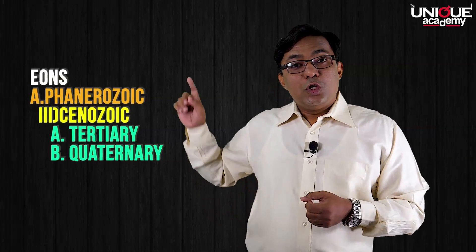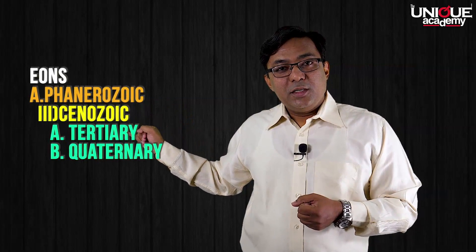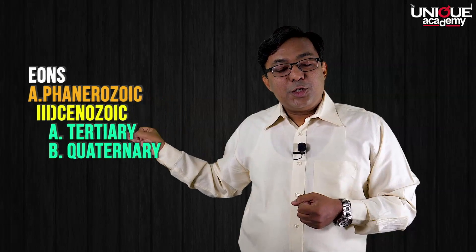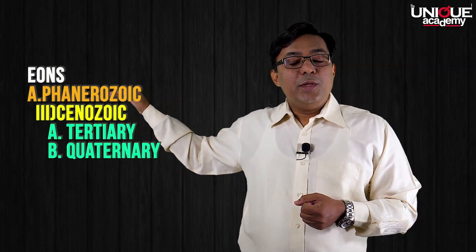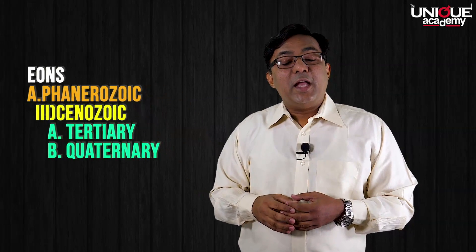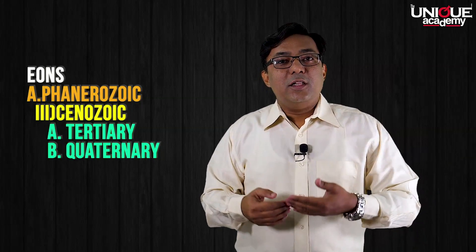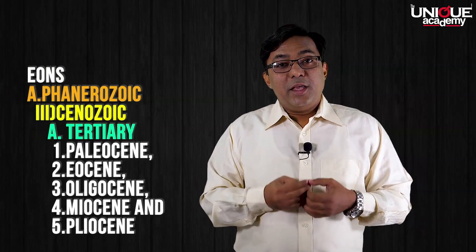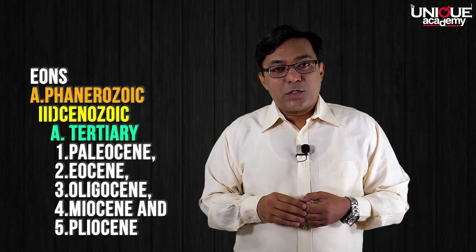After Mesozoic, we have the latest era known as Cenozoic. Cenozoic is divided into two periods: Tertiary and Quaternary. Tertiary spans from 65 million years before present to 2 million years before present, and Quaternary from 2 million years before present till today. Tertiary is again divided into five epochs.